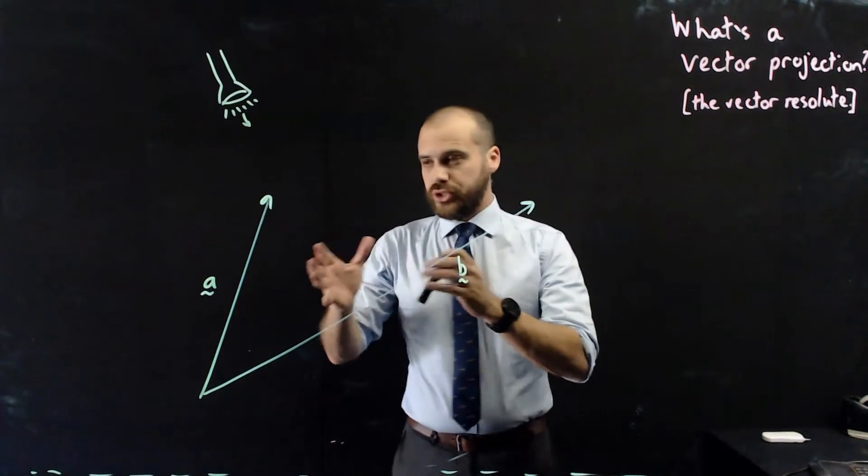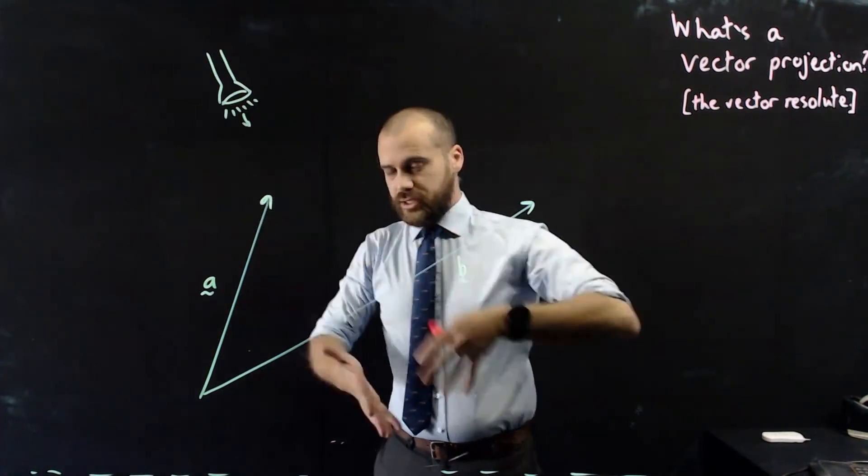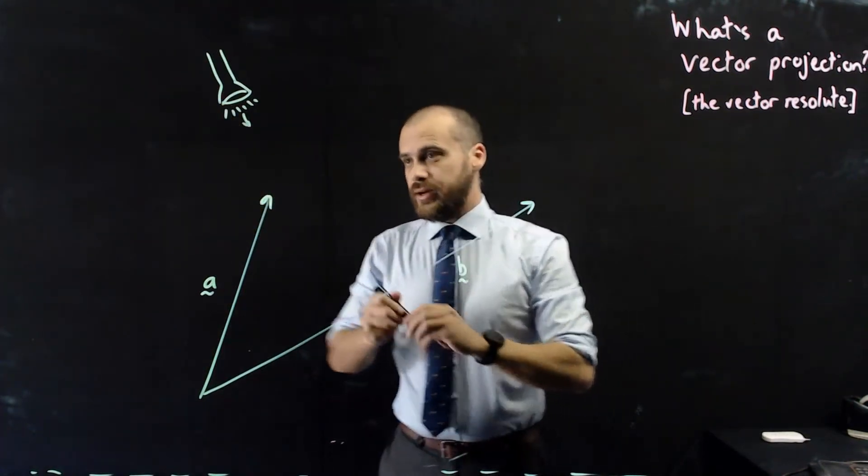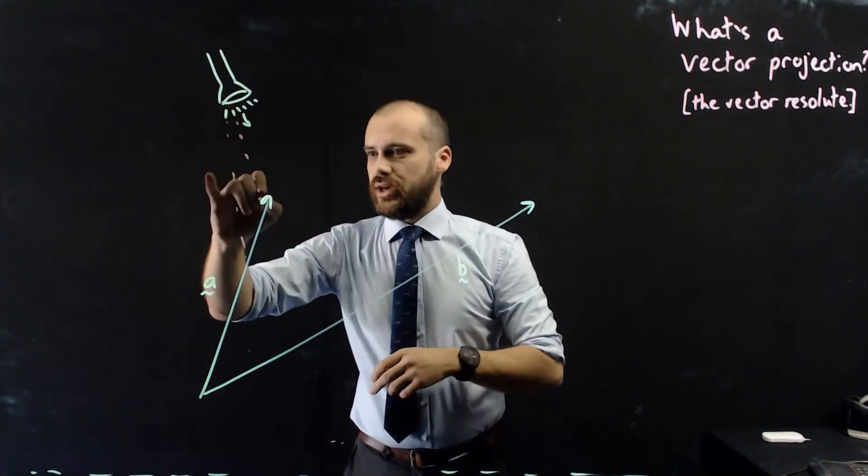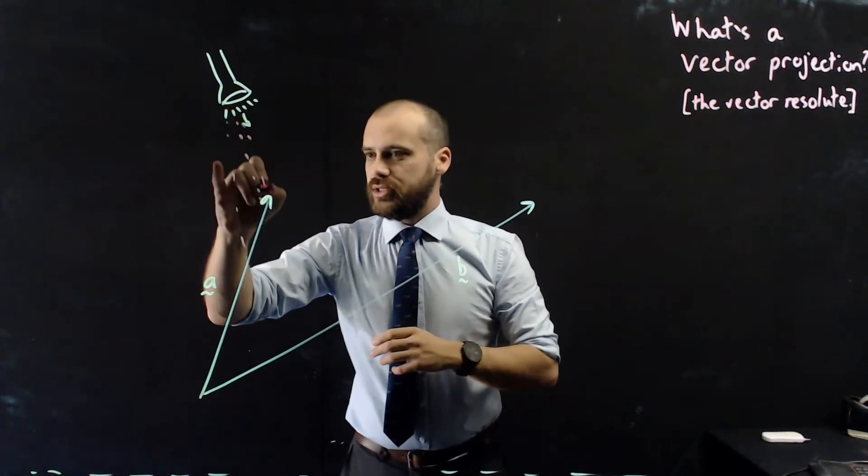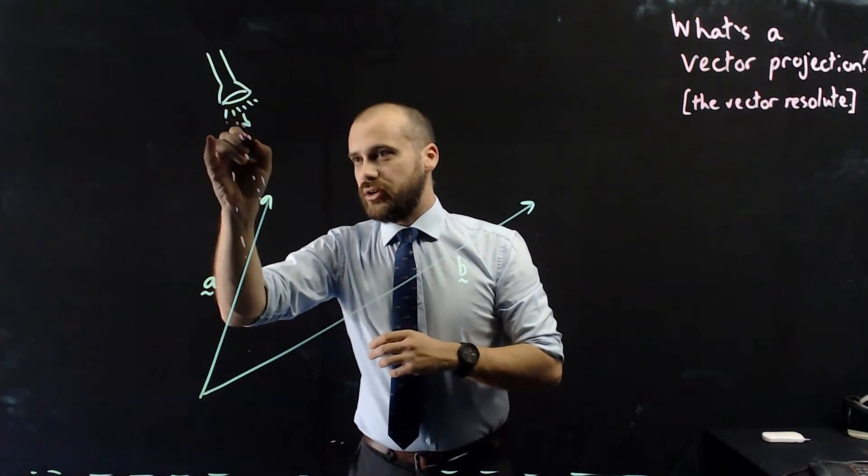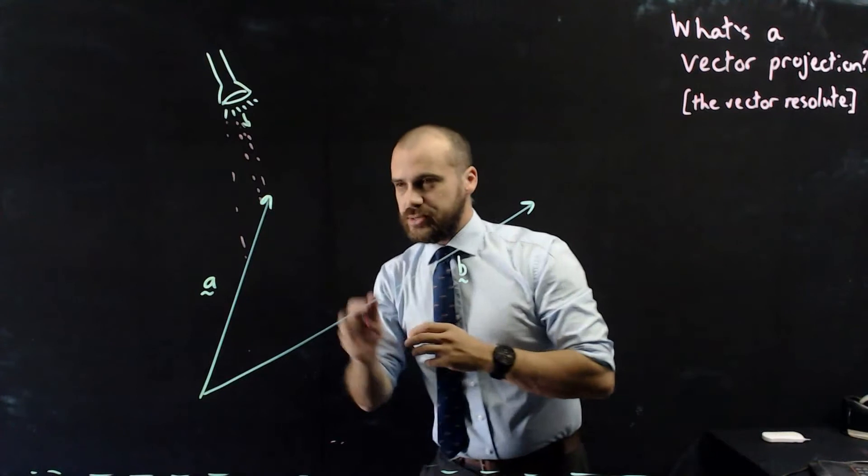Now there's my torch, and my torch is going to cast light in this direction. The light's going to go that way and hit vector A. The light's going to go that way and hit vector A. The light's going to go that way and just pass by vector A.